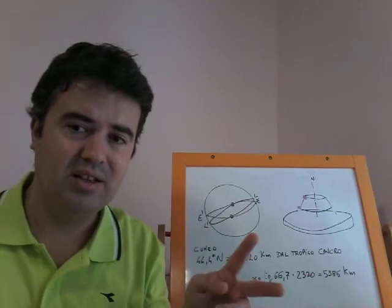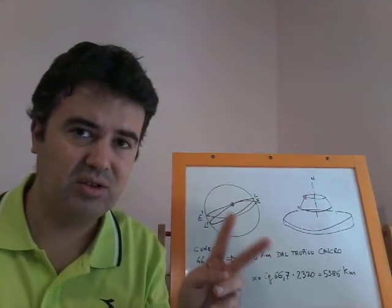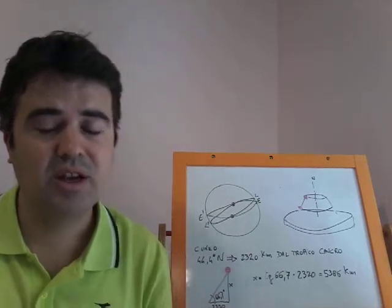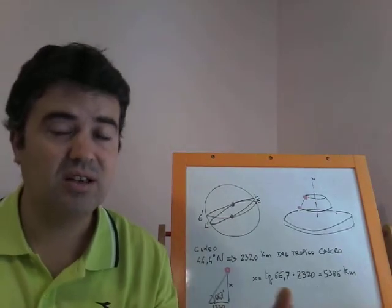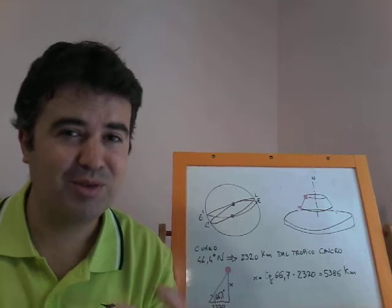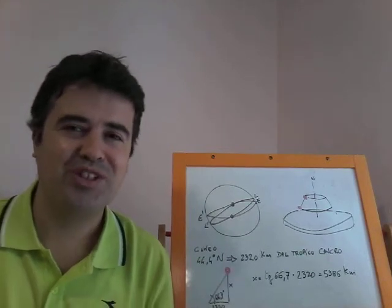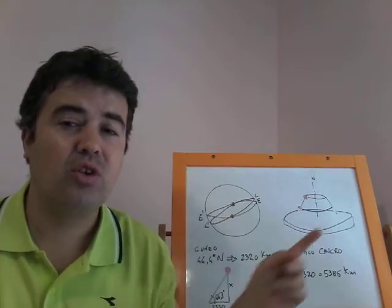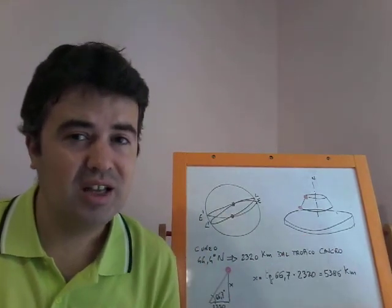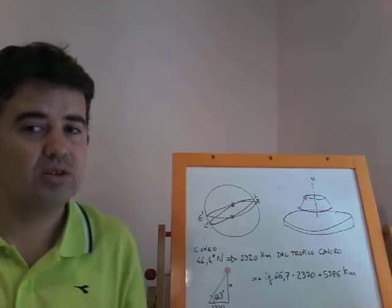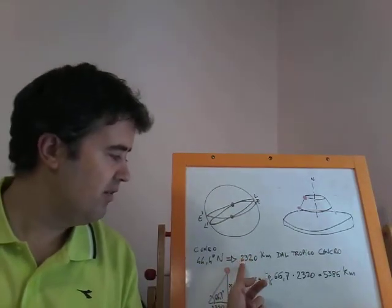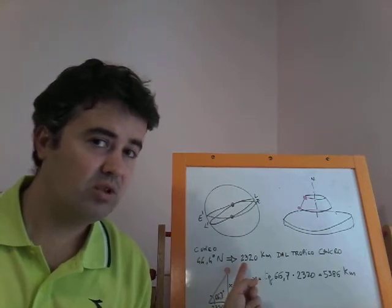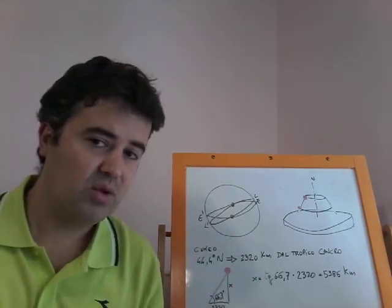So by subtracting 44.4 minus 23.5, and then the angle distance must be multiplied by 111 kilometers. Because we have seen in a past video, if you do not remember, please go to watch it again, that 1 degree of latitude corresponds over the Flat Earth to 111 kilometers. So I can find that the distance from the place where I live to the Tropic of Cancer is this one.